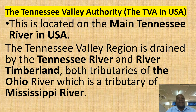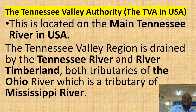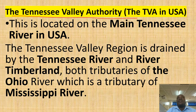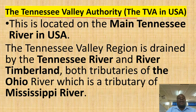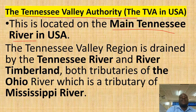Okay class, we are going to look at one of the case studies of multipurpose river projects, and we begin with the Tennessee Valley Authority, which is sometimes abbreviated as TVA. In this lesson we need to know where it is located and the states of USA itself. This is located on the main Tennessee River in USA.